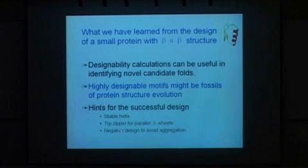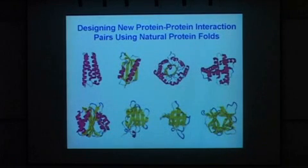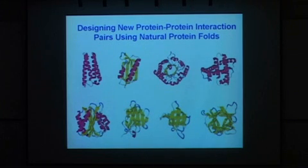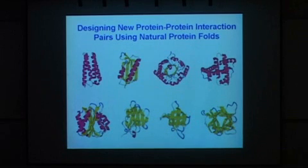The lessons learned for this particular protein structure design are: we need to design a stable helix, introduce a tryptophan zipper for stabilization of parallel beta sheets, and it's quite important to do negative design to avoid aggregation. After the structure design, the next step in synthetic biology is to use new proteins we've designed, or naturally occurring proteins, to design new protein-protein interaction pairs.